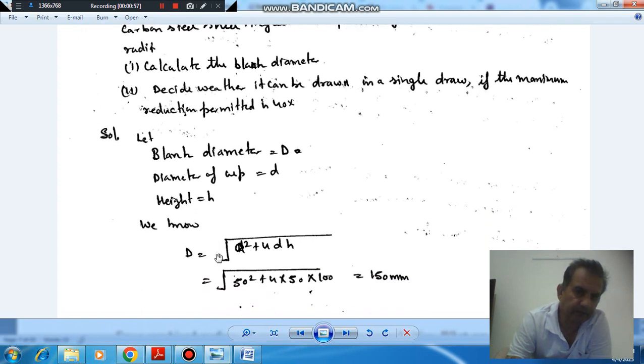We know that the blank diameter is root of d squared plus 4dh. Small d is 50 and h is 100, so capital D comes to 150 mm.